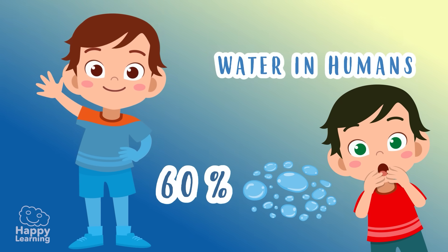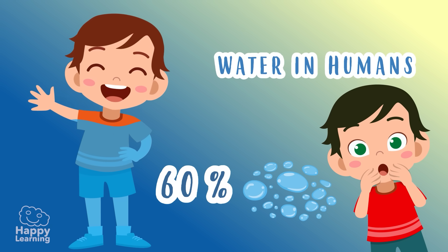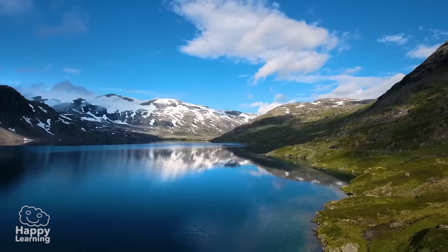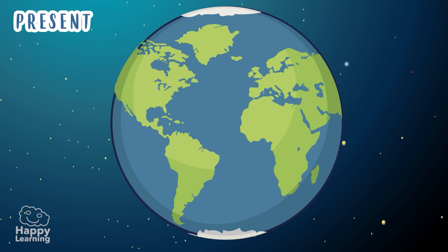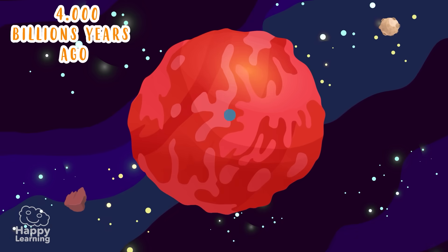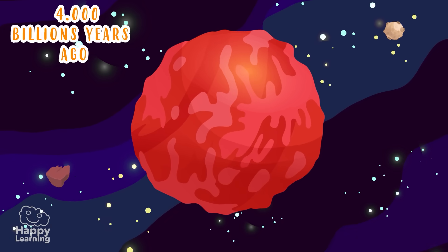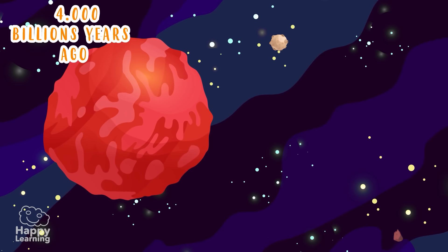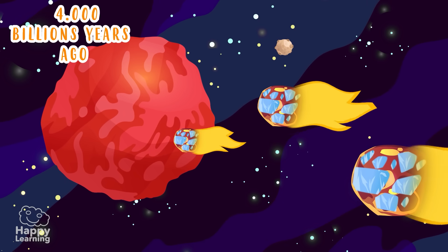We could almost say that we are also part of the hydrosphere. But do you know how water came to Earth? It all started 4 billion years ago, when our planet was a huge, super hot ball, and a bunch of comets and asteroids loaded with ice crashed into it.